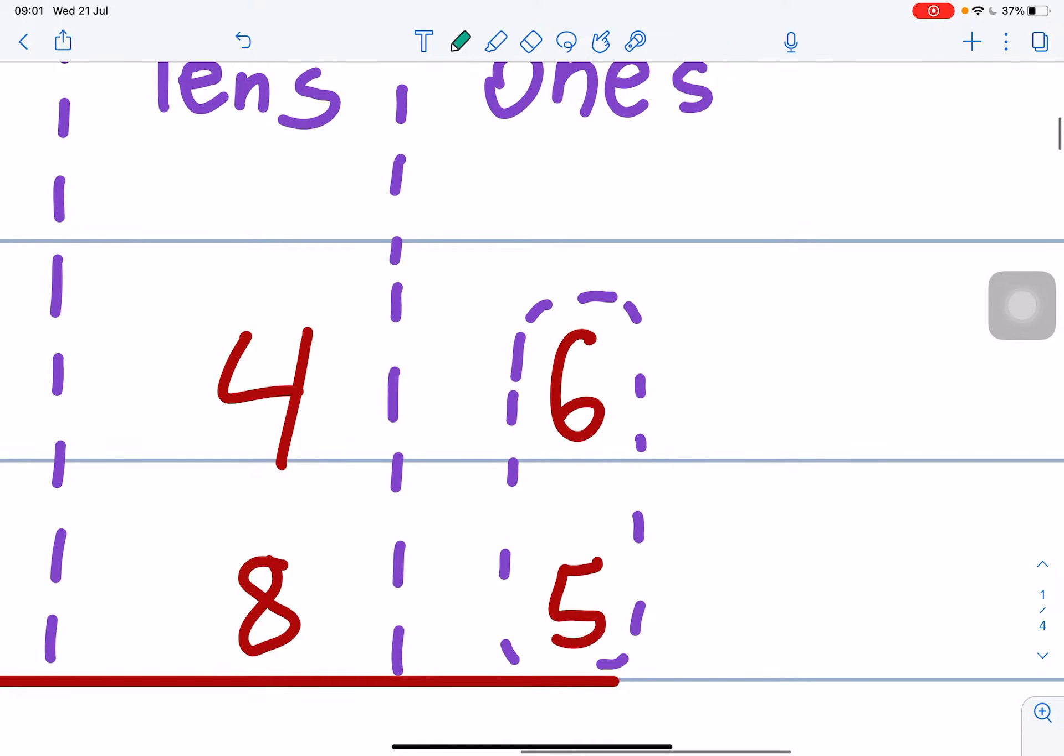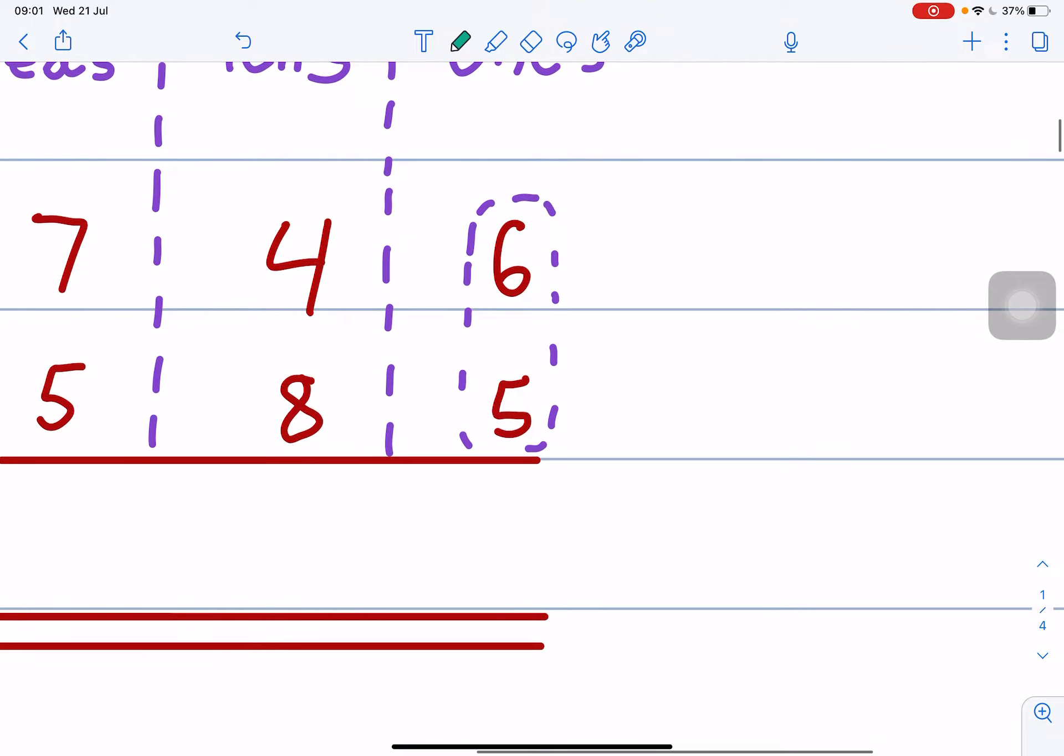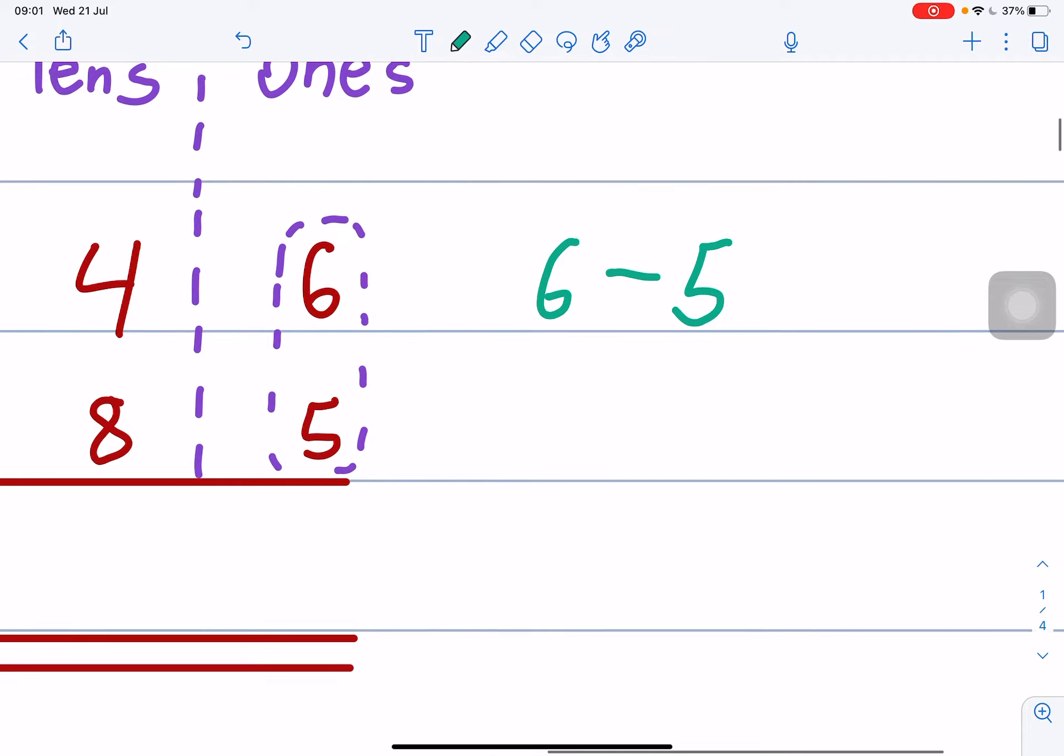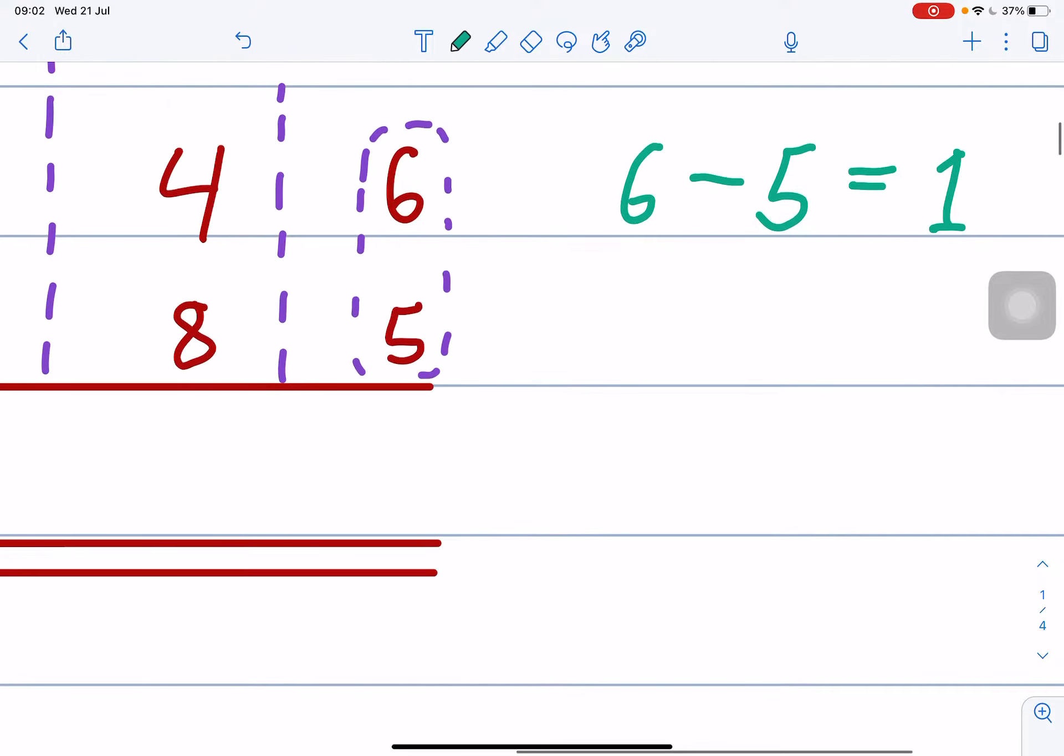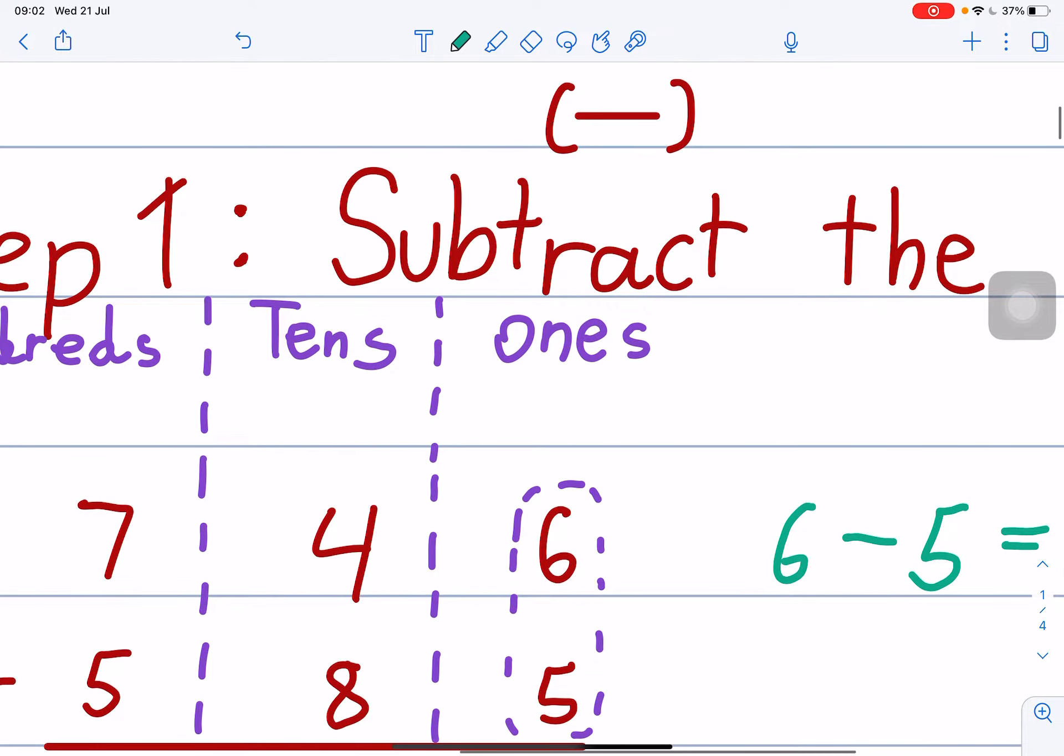So here, ones place value. So, 6 minus 5. Can or cannot? Can. We can minus. Do we borrow or no borrow? Once, no borrow. So, 6 minus 5 is 1. So, you write 1. Step 1, finished.